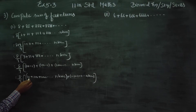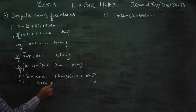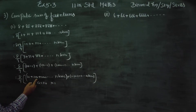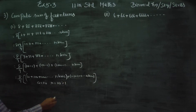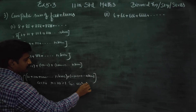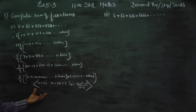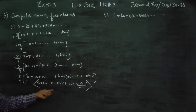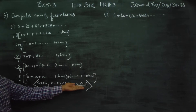This is the common ratio: T2 by T1 is 100 by 10, which equals 10. Since R equals 10 is greater than 1, the SN formula to use is: S_N = A into R power N minus 1, divided by R minus 1. This is just a recall of the GP sum formula.